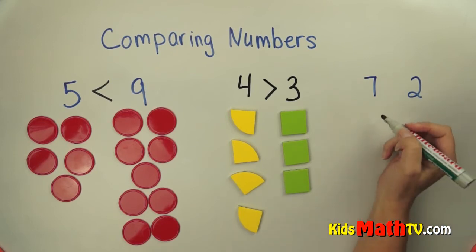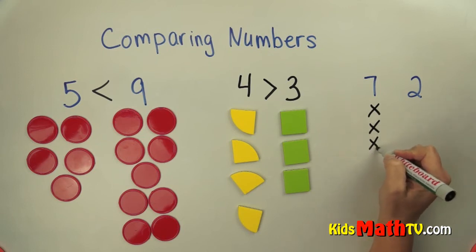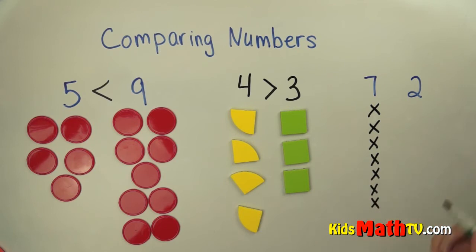I'm going to make seven x's. One, two, three, four, five, six, seven. So there's seven x's there and two x's here.